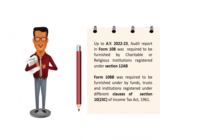the audit report in Form 10B was required to be furnished by those charitable or religious institutions registered under Section 12AB of the Income Tax Act, and Form 10BB was required to be furnished by those funds, trusts, and institutions registered under different clauses of Section 10(23C) of the Income Tax Act.